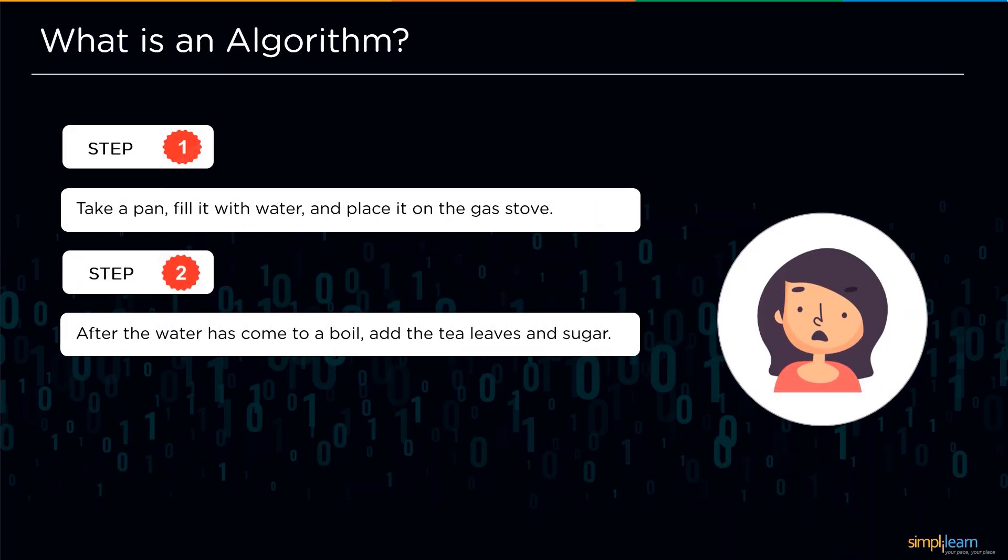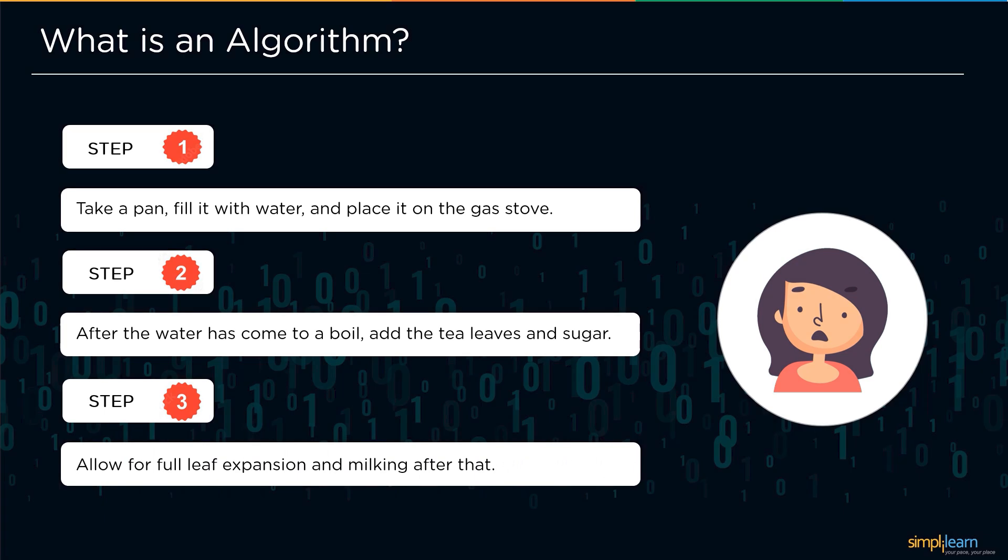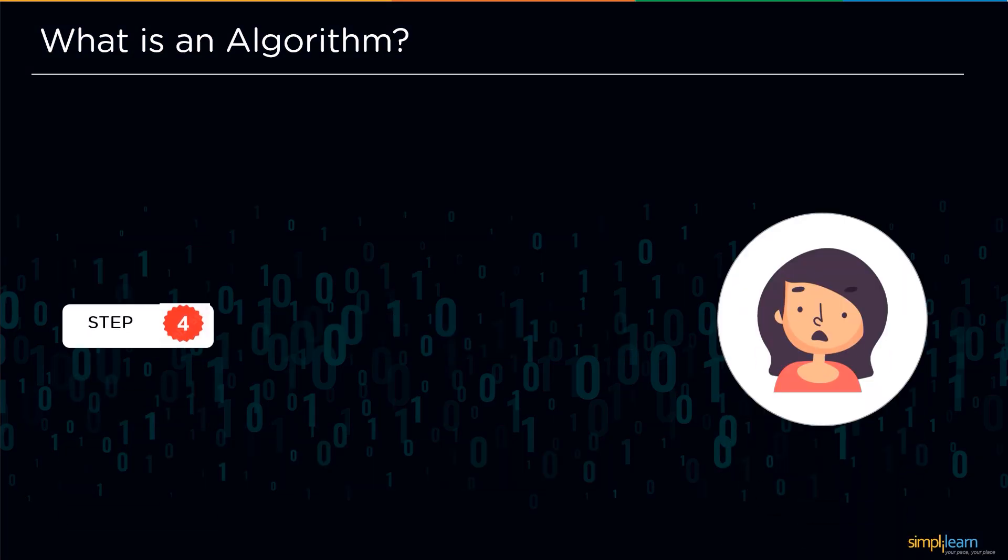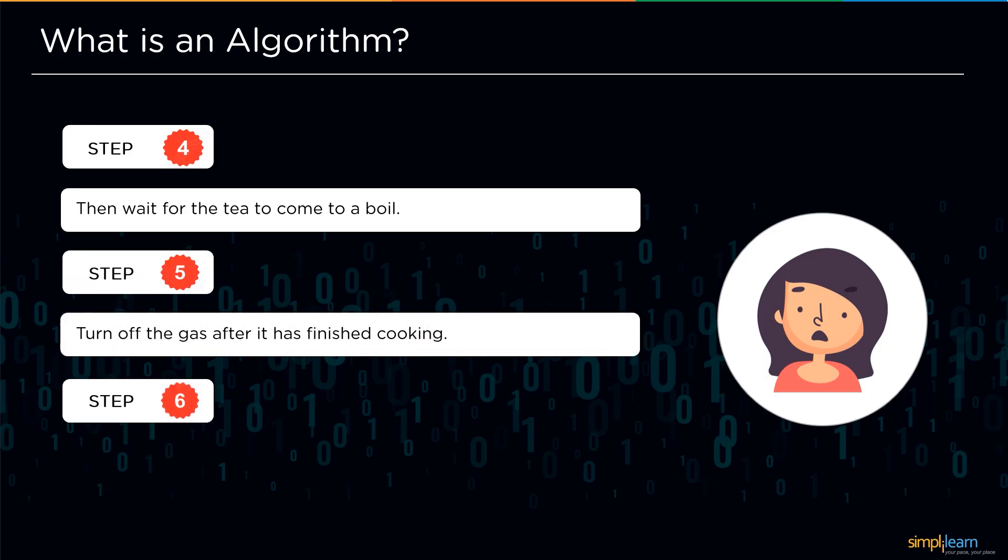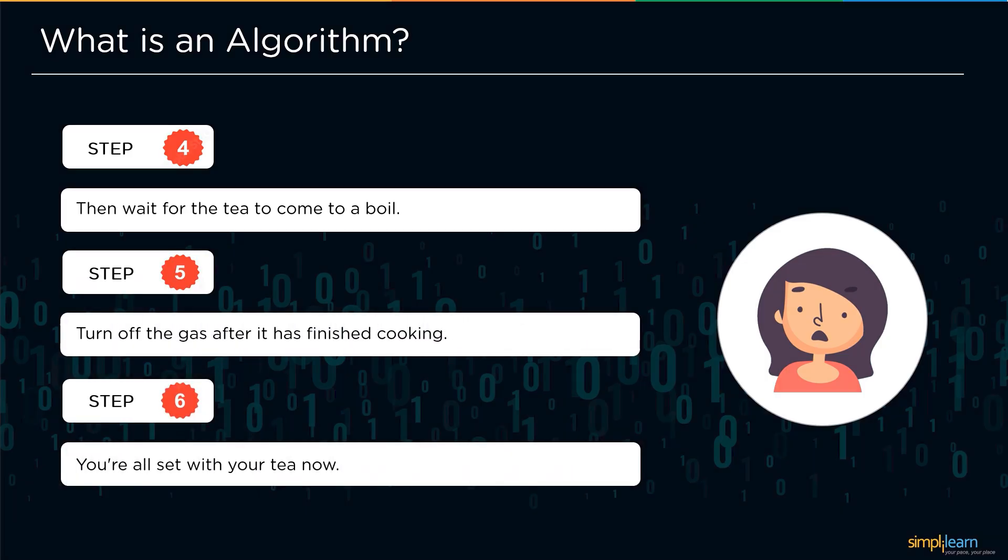The first step is she'll take a pan and fill it with water and place it on a gas stove. Step 2: she'll make sure that the water comes to a nice boil and then she adds some tea leaves and sugar. Step 3: she'll allow the leaf to be fully expanded and she'll add some milk. Step 4: she will wait for the tea to come to a good decent boil. Step 5: she'll turn off the gas and take the pan off from the stove and the tea is ready to get filtered. And lastly, Step 6: she is all set with the tea.